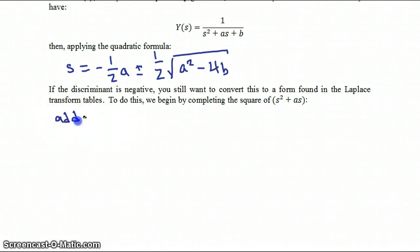By adding and subtracting from the bottom 1 quarter A squared. So then we have Y of S is equal to 1 over the quantity S squared plus A S plus 1 quarter A squared plus B minus 1 quarter A squared.